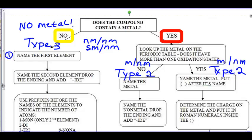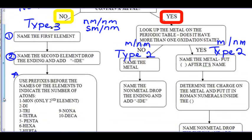You will name the first element first. Name the second element, drop the ending and add IDE. This is unique, this is different - we use prefixes to indicate the number of atoms of each element.